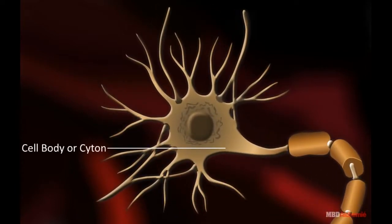Cyton. It is also called cell body. Its granular cytoplasm is called neuroplasm, and in the center a spherical nucleus with nucleolus is present.